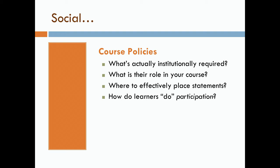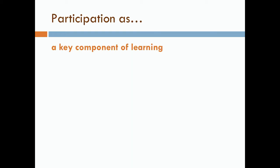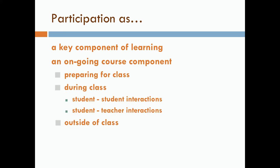To signal social participation beyond policy, use narrative that describes participation as a key component of learning — that learning is social and happens from people talking to each other. If participation is an ongoing course component, engage students in it as early as homework preparation, so that what they do for homework helps them become ready to talk with others. This is especially good for introverted processors, students working in their second or third language, and students who don't speak academic English as a first language — they get a chance to prepare materials and think about how to discuss them with others.